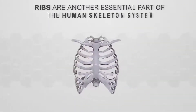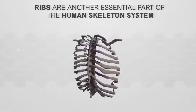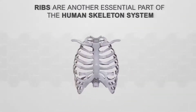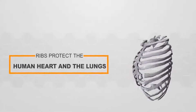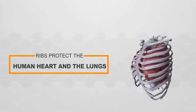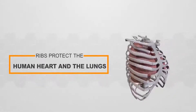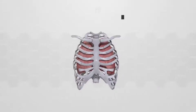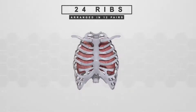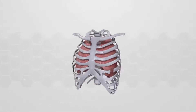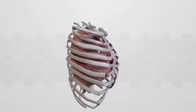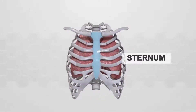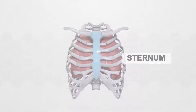Ribs are another essential part of the human skeleton system. Ribs protect the human heart and the lungs. The human body has 24 ribs, arranged in 12 pairs. The ribs are attached to the backbone at the back and to the sternum in the front.